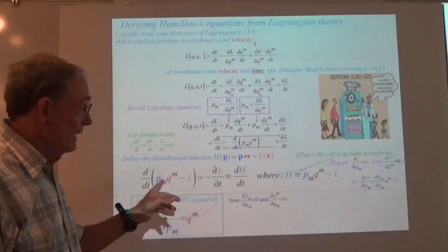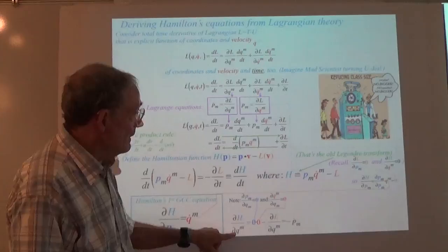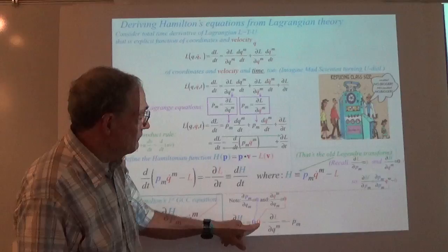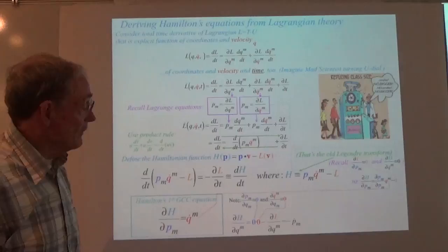The partial derivative of H with respect to Q — if this is H, I get double zero right here. And then finally the partial with respect to Q_N, the nth component of coordinate, of L. We already know what that is. That's the thing that's going to give us Hamilton's second equation.